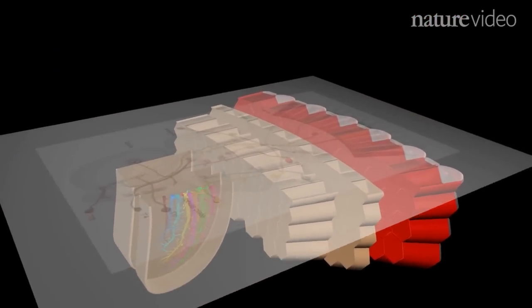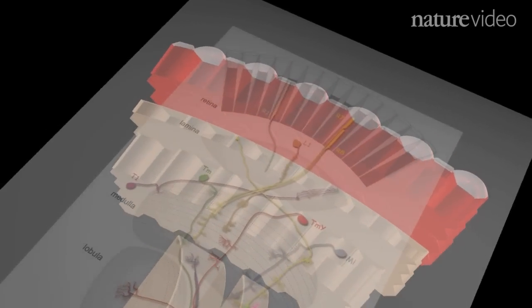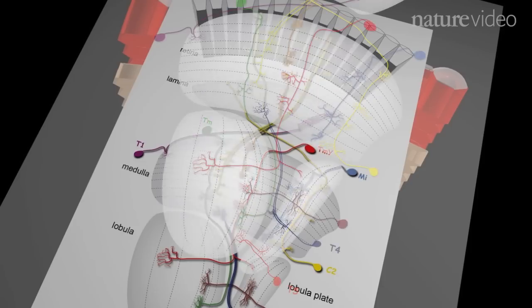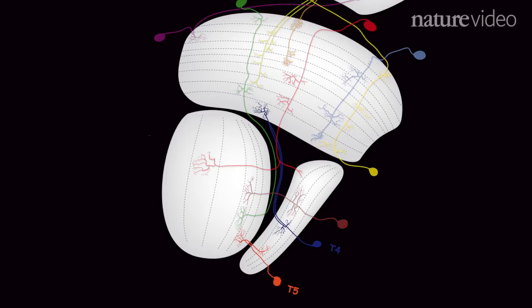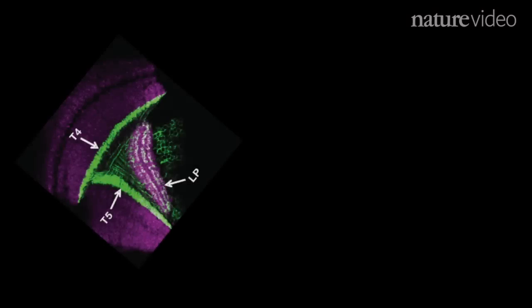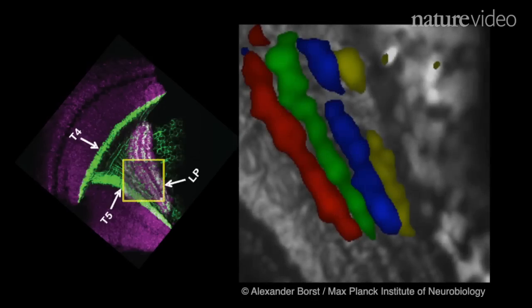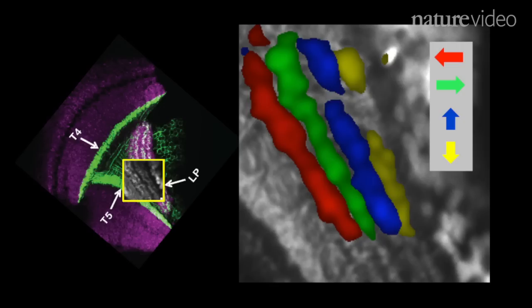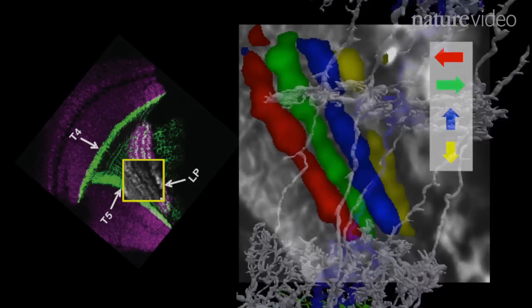Photoreceptor cells in the retina can't detect motion, so they focused on two downstream processing neurons called T4 and T5. Using fluorescent markers that glow when a neuron is active, they showed that T4 and T5 neurons are divided into four subpopulations, and like the previous study, they showed that each subpopulation responds to motion in one of four cardinal directions: left, right, up, or down.